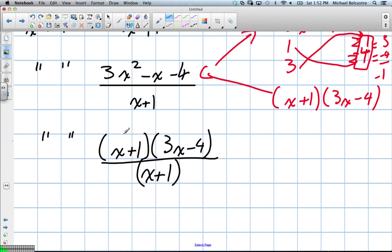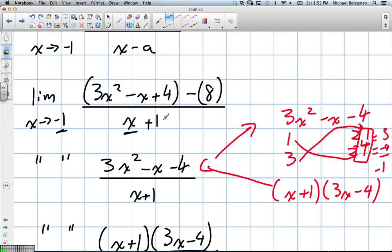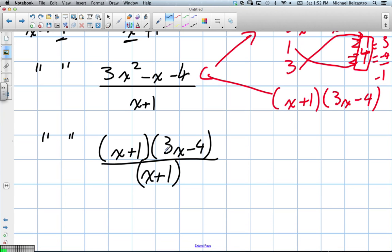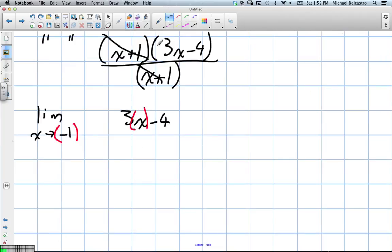were to go plug this limit in of negative 1, well, negative 1 plus 1 gives us 0, and it would not exist. So now that this happens, we can cancel out and we're left with 3x minus 4 when the limit of x as it approaches negative 1. Well, great. Now we can actually plug in our negative 1 value for x to find out this limit. So it turns out that 3, negative 1 minus 4 gives us negative 3 minus 4 equals negative 7. So our limit is negative 7.